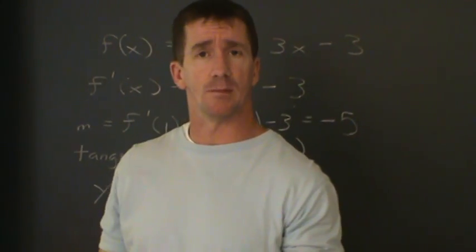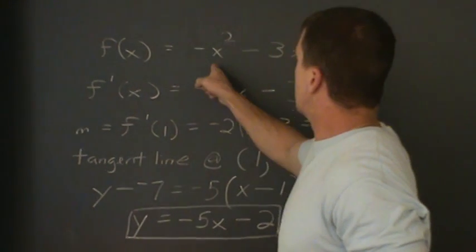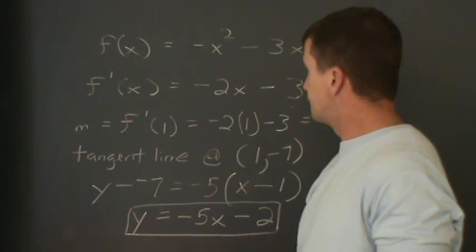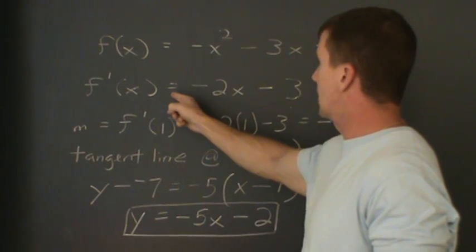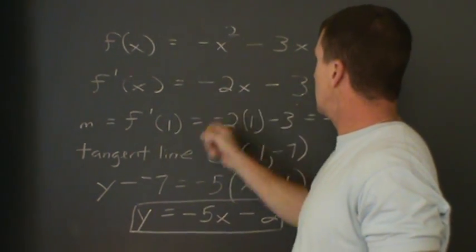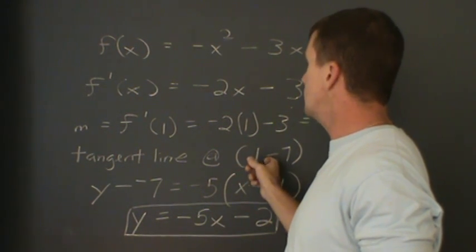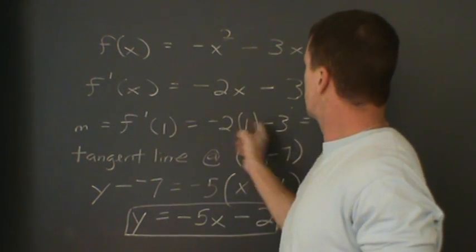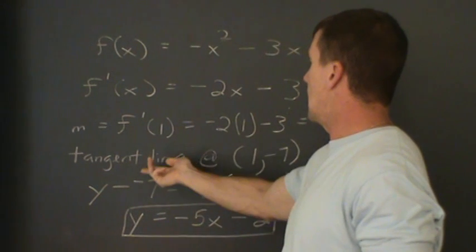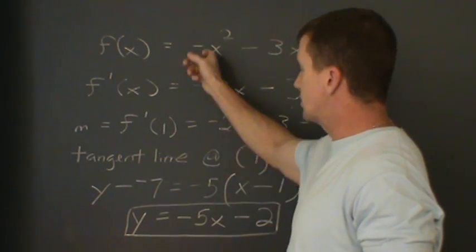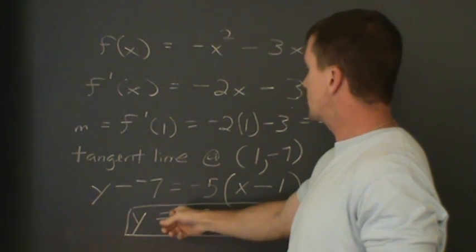As you saw in the module, we had this curve y equal to negative x squared minus 3x minus 3. The slope, we found out the derivative came out to be negative 2x minus 3, and at the point 1, negative 7, the slope at 1 was negative 5, and our tangent line equation, our tangent line drawn to that curve, is this equation right here.